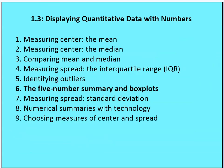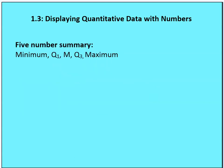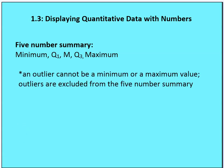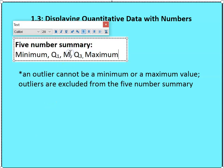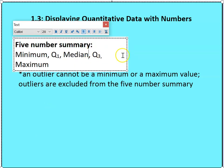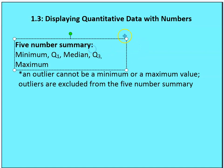Now let's talk about the five-number summary and box plots. The five-number summary includes the minimum, first quartile, the median, the third quartile, and the maximum. Outliers cannot be considered for the minimum or the maximum in the five-number summary.